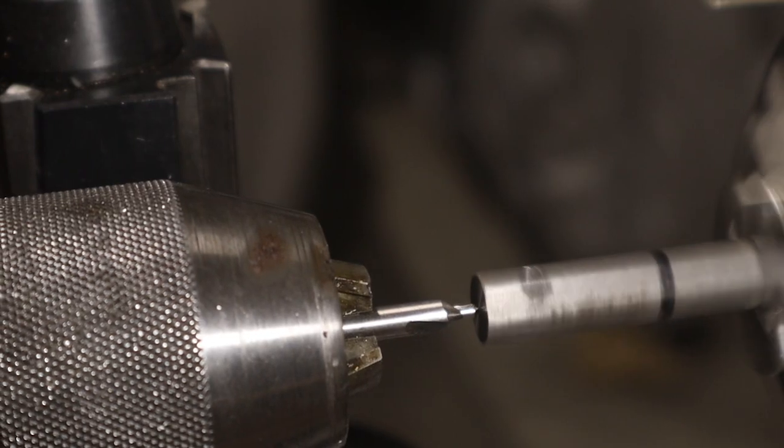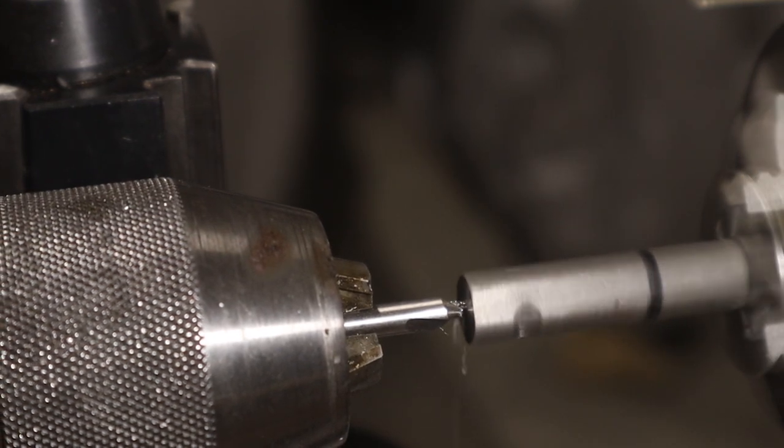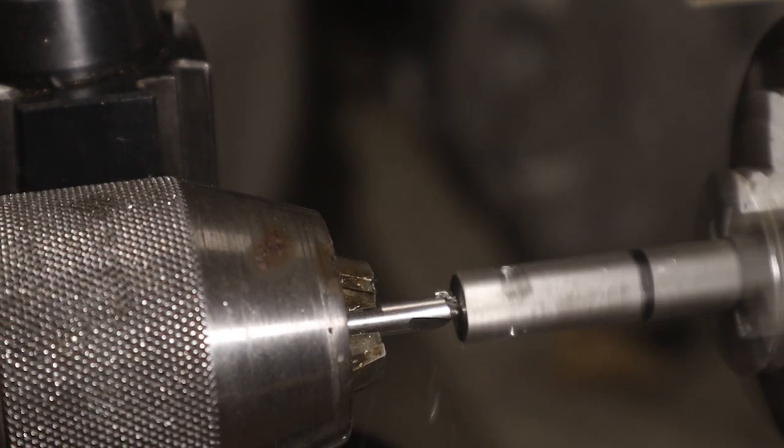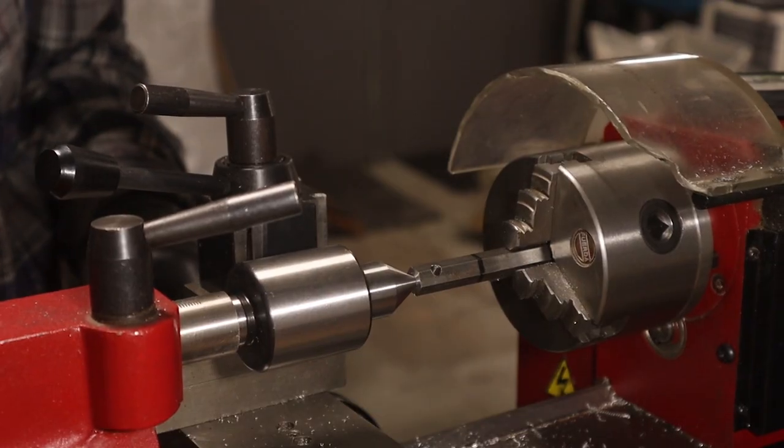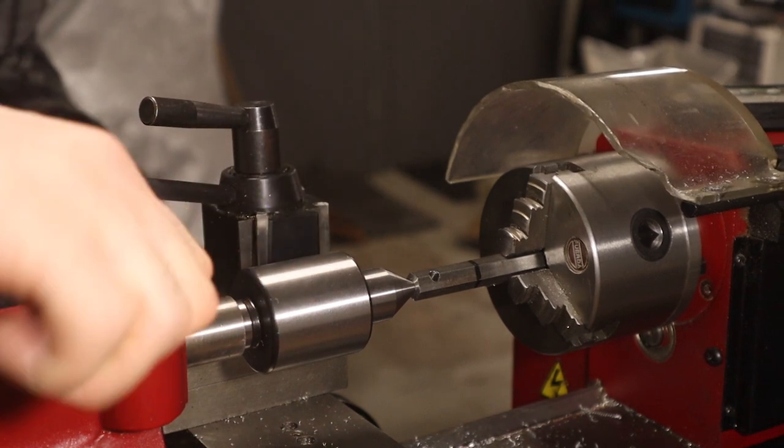Then we give ourselves some stick out, put the center at the end of the part and add some tail support. It's always a good idea on these small lathes, but I bet you can get away without it by having less stick out and taking smaller cuts.